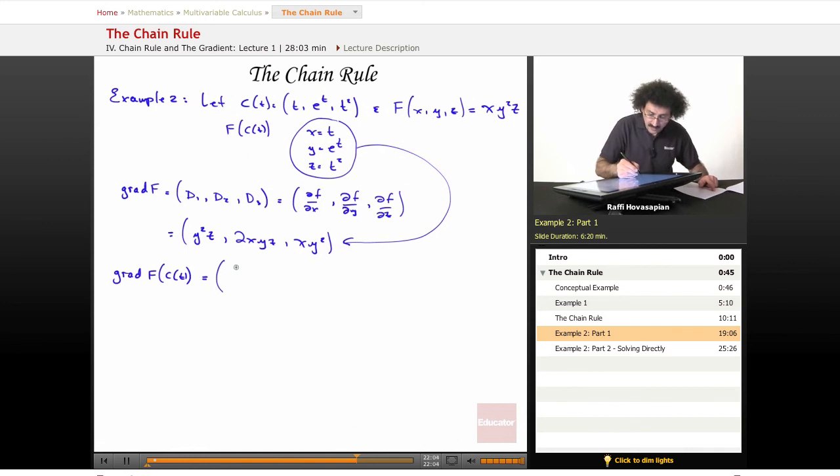x is t, y is e^t, z is t^2. So when I put these things into here, here's what I get. Y squared is just, so it's going to end up being t^2·e^(2t). Y squared is just e^(2t), z is t^2. So that's t^2·e^(2t).